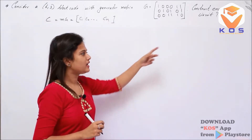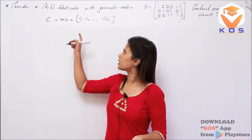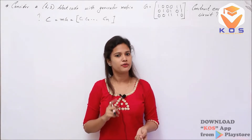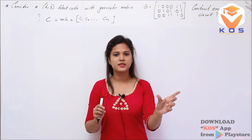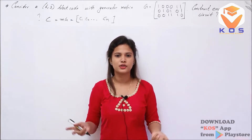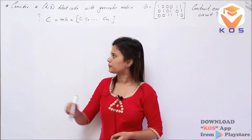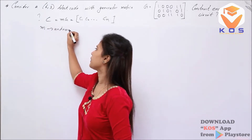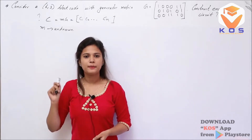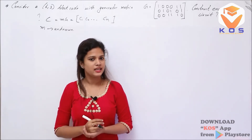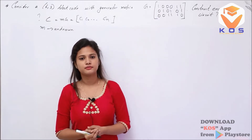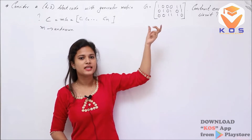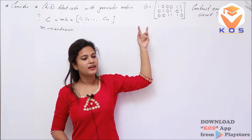Let's consider a 6-3 block code with the generator matrix given. We have to construct an encoder circuit. We will find C = MG. G is the generator matrix consisting of the identity matrix and the parity generator matrix.